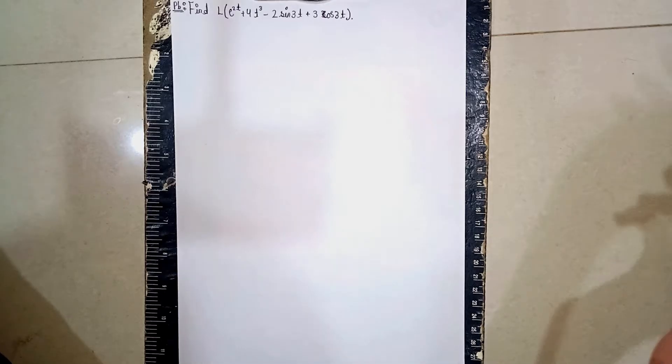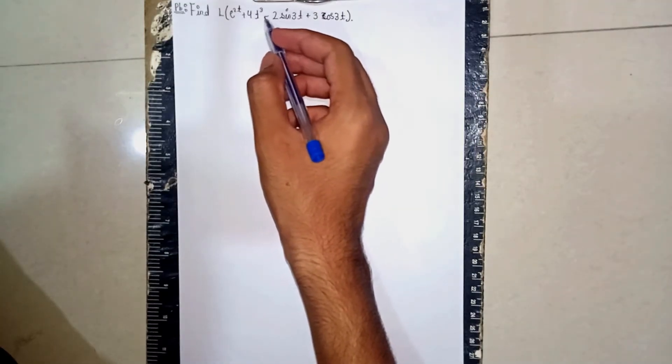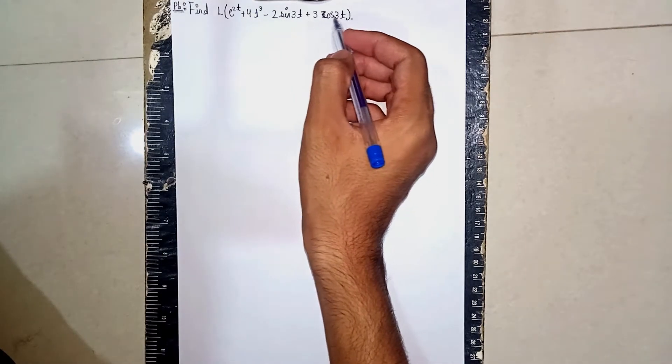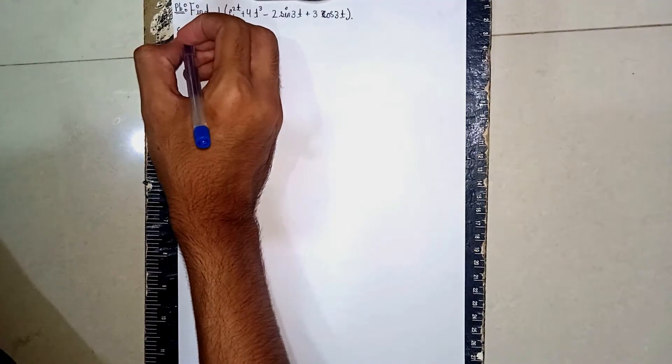Hello everyone, welcome back to my channel. This question: find Laplace of e^(2t) + 4t^3 - 2sin(3t) + 3cos(3t). This is a Laplace transformation. First write the solution, then afterwards I will write the given data.